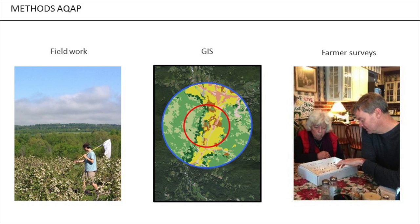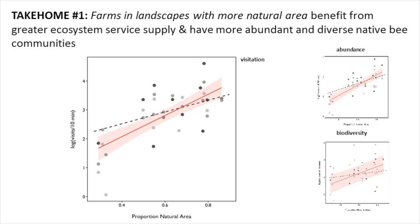So to that first question: here we're looking at the proportion of natural area on the X-axis and visitation rate — our measure of ecosystem service supply — on the Y-axis. We see that as farms increase in the amount of natural area around them, they benefit from more pollination. And this relationship also holds true for the abundance and biodiversity of bees.